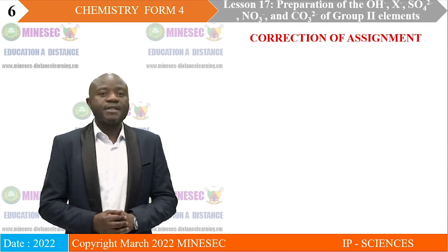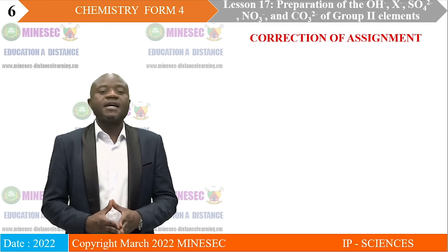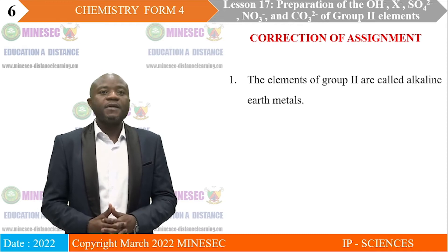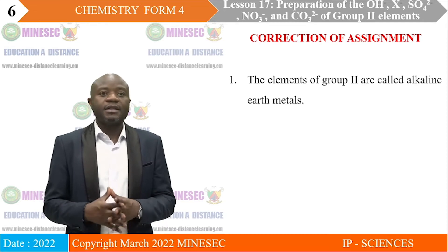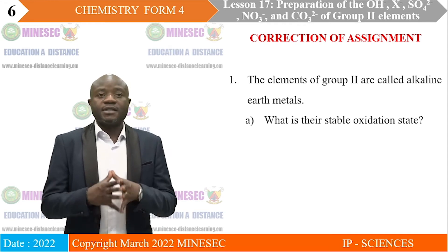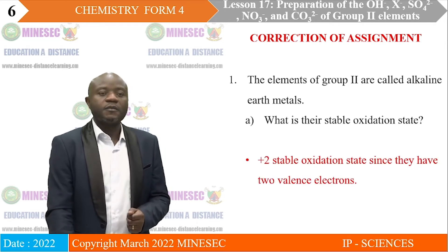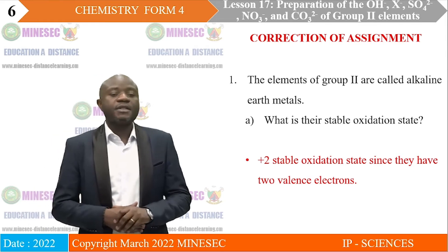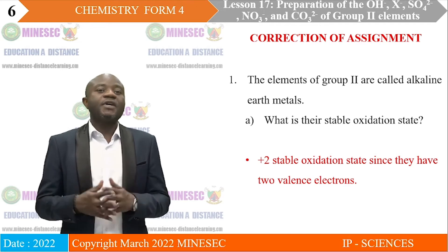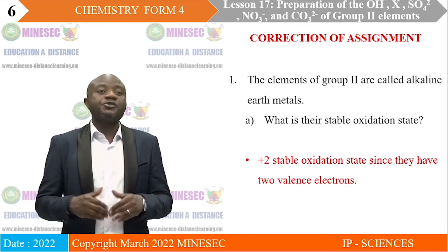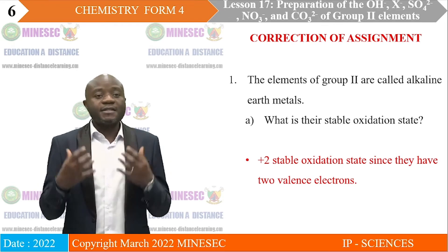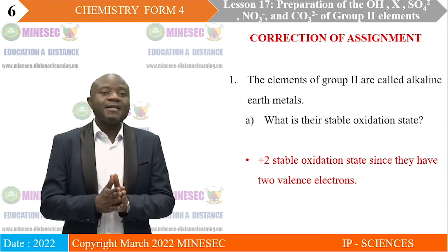Before we proceed with the lesson, let us correct the assignment we had in the last lesson. Question number 1: The elements of Group 2 are called alkaline earth metals. A. What is their stable oxidation state? The elements of Group 2 of the periodic table have two valence electrons, and when they lose these two valence electrons, the result is the formation of an ion with a plus 2 oxidation state. So, the stable oxidation state of the Group 2 elements is plus 2.